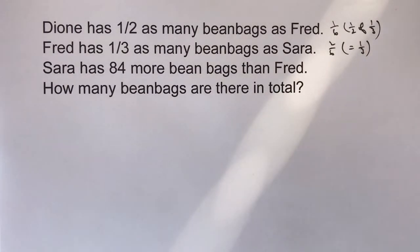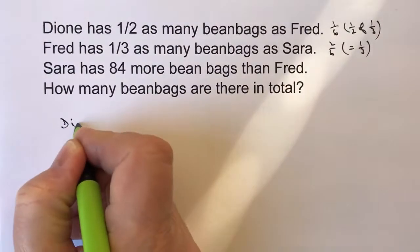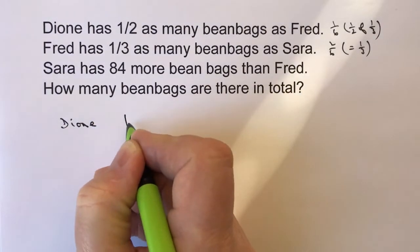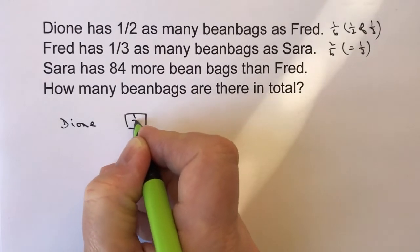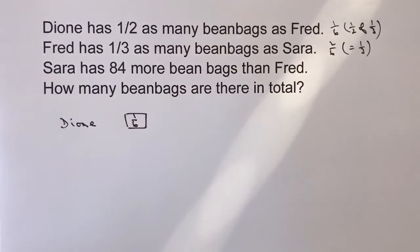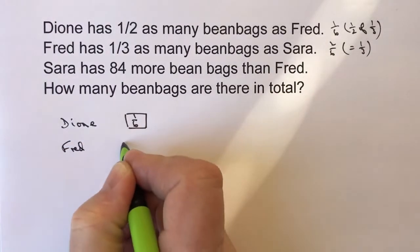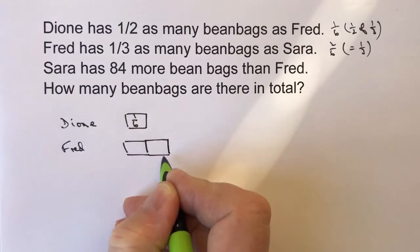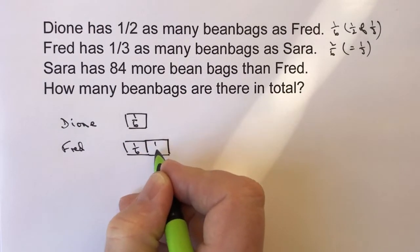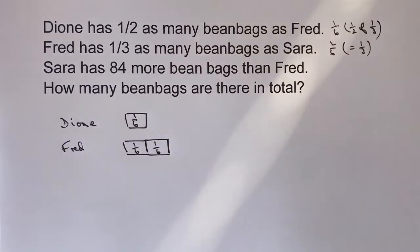Let's look at that now as a picture, and from there we'll be able to find out how many bean bags there are in total. If we start with Dion, Dion has got one sixth of the available bean bags. Fred has two sixths — one sixth here and one sixth there — and those two sixths together make one third.